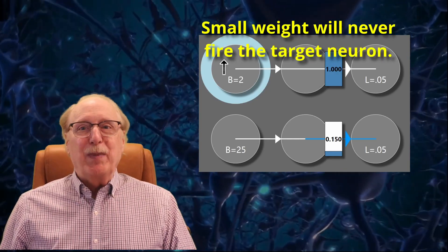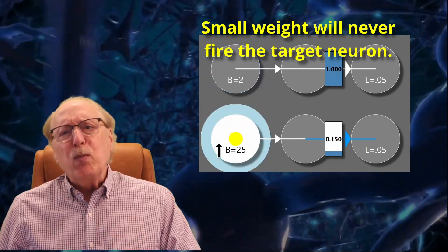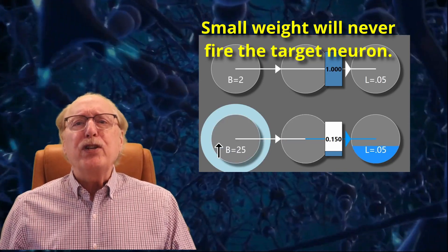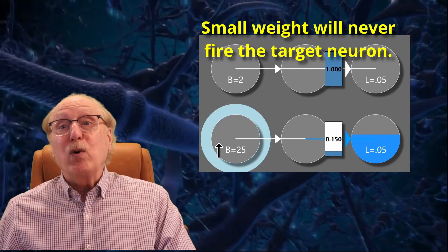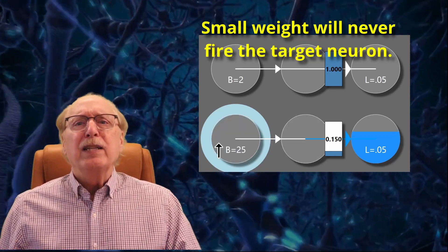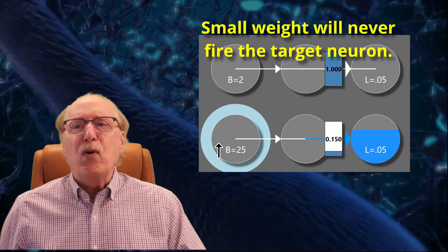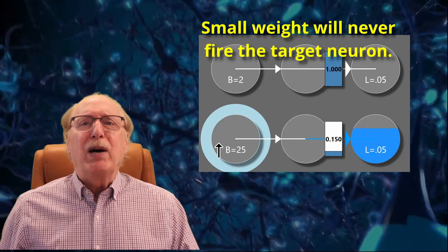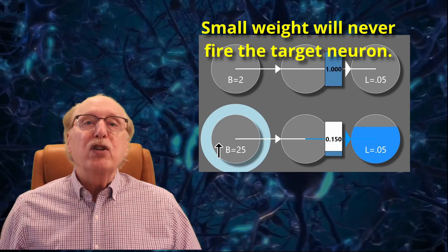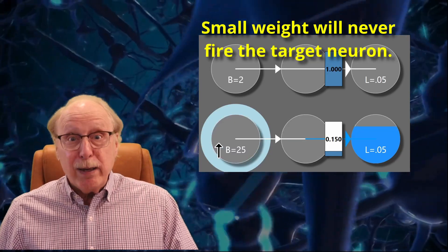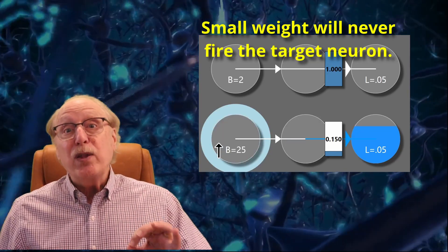To complicate matters, if the synapse weight is small, the target activation will never be sufficient to overcome the leakage. So the target neuron will never ever fire. In this example, if the weight is below 0.15, no amount of maximum rate spiking will overcome the leakage. So neurons can only use low synapse weights in combination with other synapses.